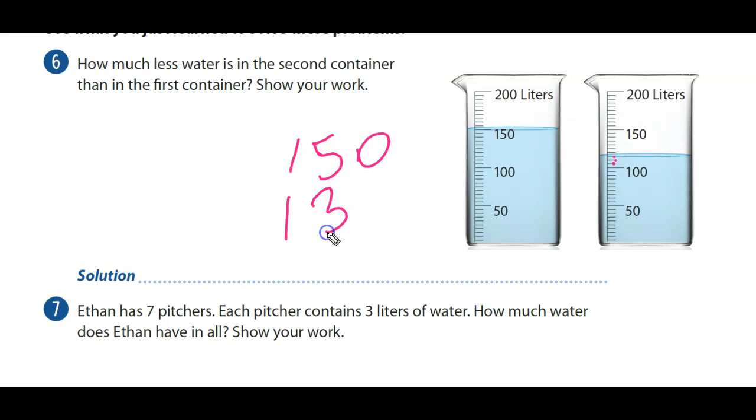So I subtract 150 minus 130. 0 minus 0 is 0. 5 minus 3 is 2. And obviously, 1 minus 1 is 0.